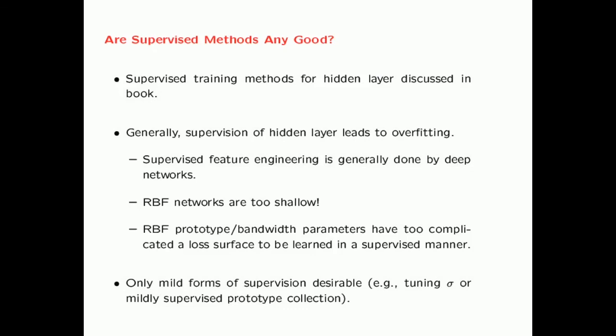A question arises: can we use supervised feature engineering to train the hidden layer? Generally, supervised feature engineering works well for modern deep neural networks. RBF networks are too shallow, have a very large number of units, and the loss surface for learning the RBF hidden layer parameters — the prototypes and bandwidth — is too complicated. The nature of the loss surface makes it very hard to learn in a supervised manner, so in most cases only a mild level of supervision is used, such as tuning the bandwidth as in kernel SVMs.